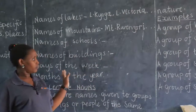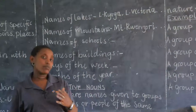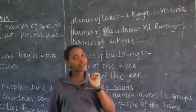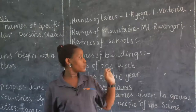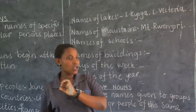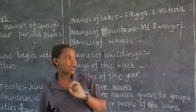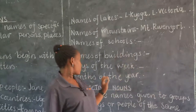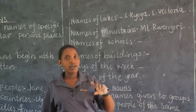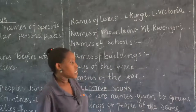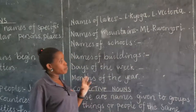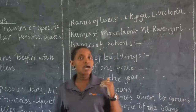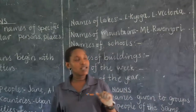Days of the week are also proper nouns. When you say 'days of the week,' it is okay, but when you want to mention a day — Tuesday, Monday, Friday — you have to write it with a capital letter. Months of the year are also proper nouns. When you want to mention March, or October — I was born in the month of October — that is a proper noun, begin it with a capital letter.